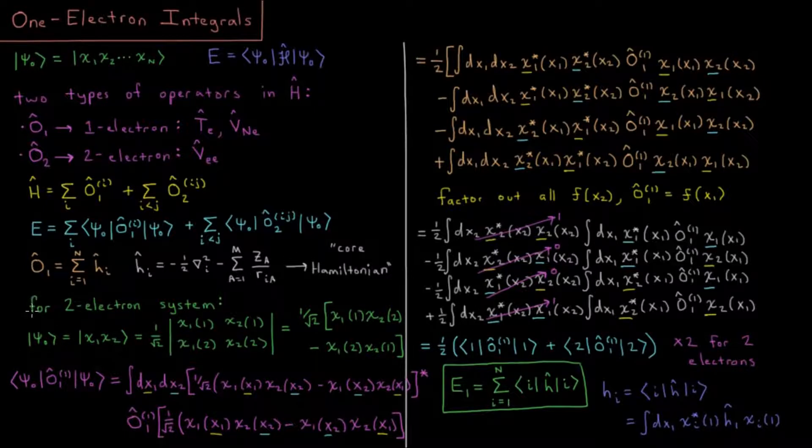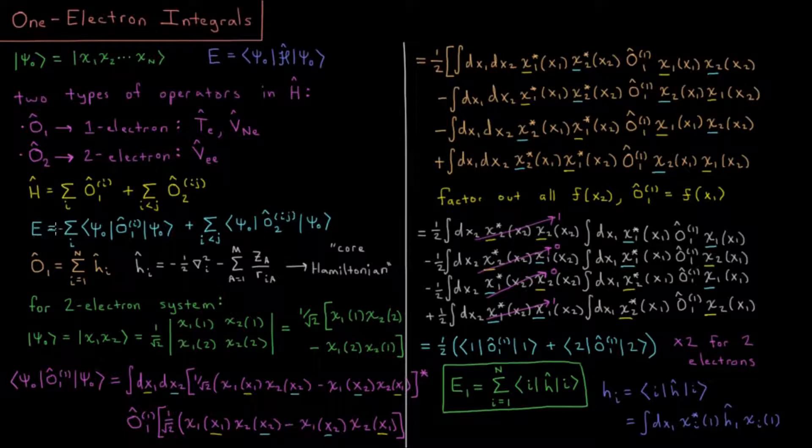For some two-electron system, what is our one-electron energy going to look like, this term here, the whole sum? Our wave function, we said, was a Slater determinant of all the occupied spin orbitals. So for two electrons, that's χ₁ and χ₂.